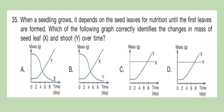Question 35: When a seedling grows, it depends on the seed leaves for nutrition until the first leaves are formed. Which of the following graphs correctly identifies the changes in mass of seed leaf X and shoot Y over time? Look at the figures carefully and select your answer.